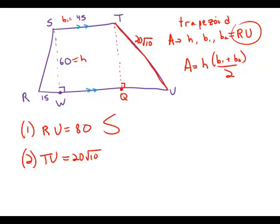And so then notice that I get a square—a rectangle rather—WSTQ. And so this side is 45 and this side is 60. Well, then I also have a right triangle, QTU.